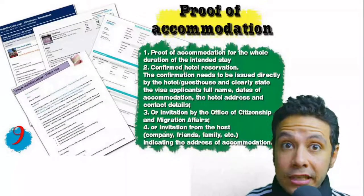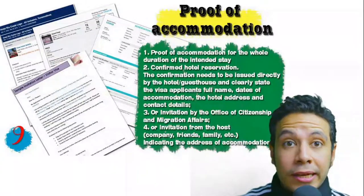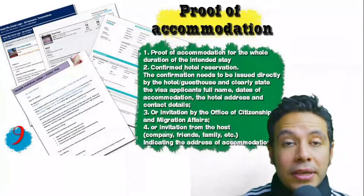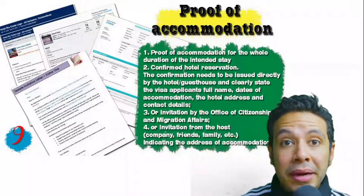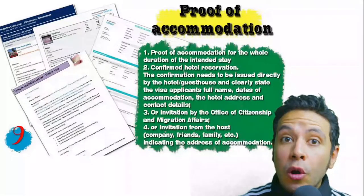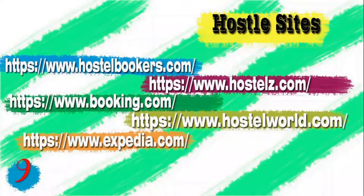You will also need to provide proof of accommodation: a confirmed hotel reservation, an invitation from a host in that country, or an invitation from an organization you are visiting. An initial hotel booking is acceptable, but in some minor cases you may need a confirmed booking. The hotel name, address, and contact number must be mentioned. If invited by a person, the invitation letter should either be mailed directly to the embassy or submitted by you along with a copy of that person's passport.